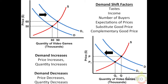Fifth, complementary goods price — a decrease in the price of a complementary good will shift the other complement's demand curve to the right. Sixth, expectations of future prices — an increase in future price expectations of consumers will shift demand to the right in the present.